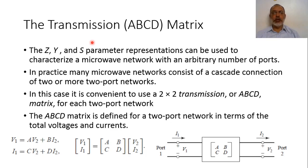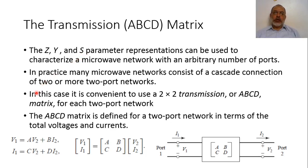Because, as we will see, the total ABCD matrix of a connection of two-port networks is the multiplication of these individual ABCD matrices. So it is convenient to use a two-by-two transmission or ABCD matrix for each two-port network.